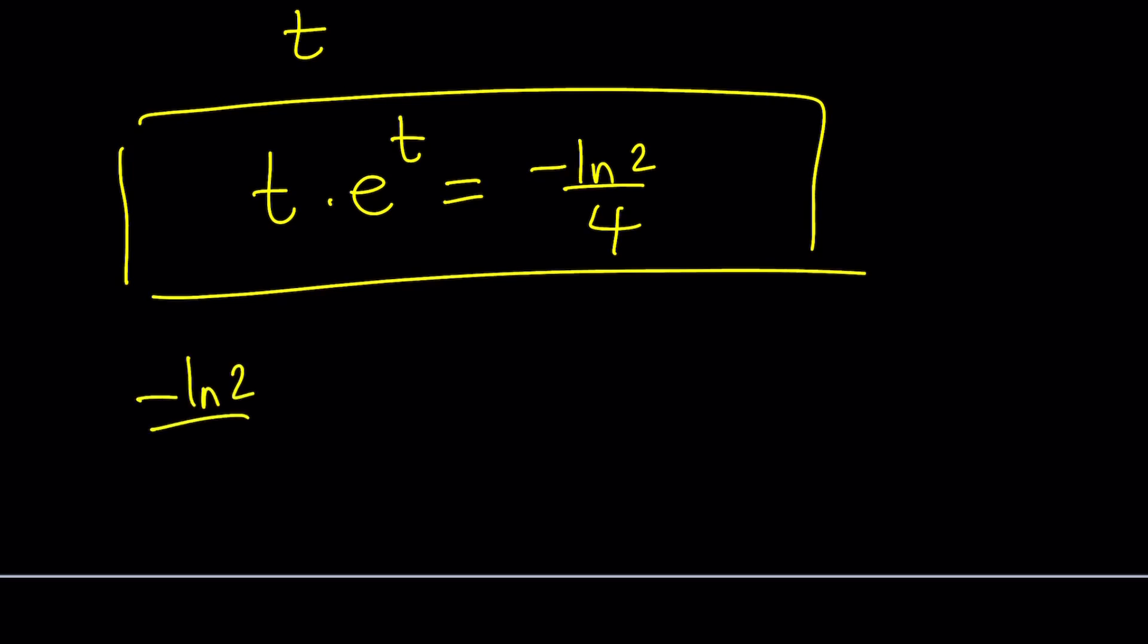Take negative ln 2 over 4, write it as negative 4 ln 2 divided by 16. I multiply the top and the bottom by 4. My goal is to get something with a constant, and to be able to get that, I want to be able to use powers. I can now move this by using properties of logs, and that gives me ln 2 to the power negative 4 divided by 16.